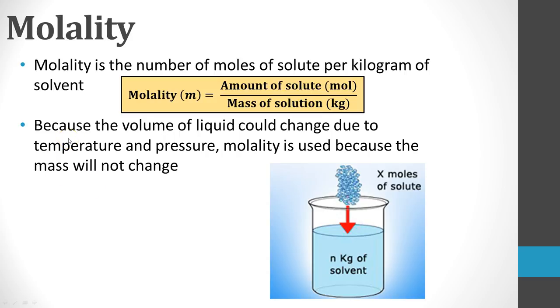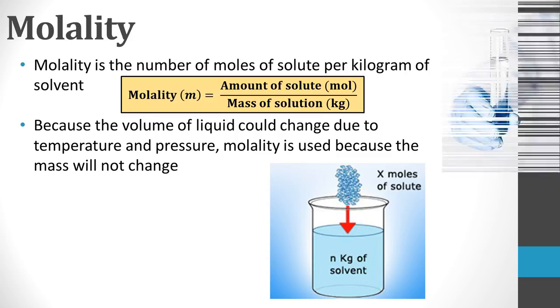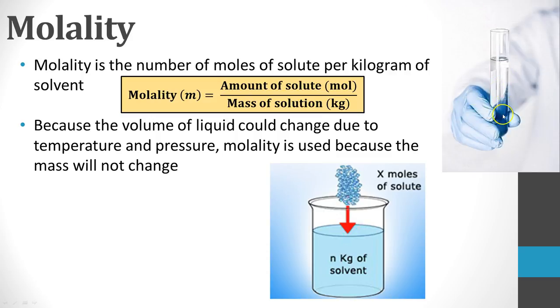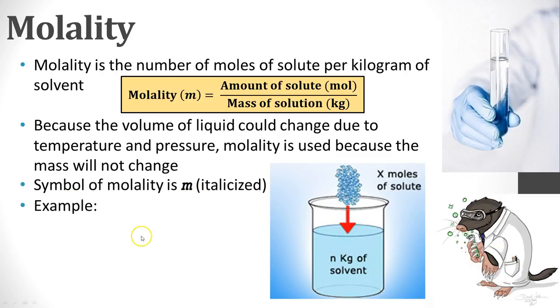Because the volume of liquid could change due to temperature and pressure, as we've already talked about, molality is used because the mass is not going to change as a result of temperature or pressure. Those things might change, the total mass of it will not. The symbol of molality is the italicized M.